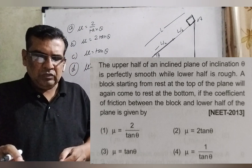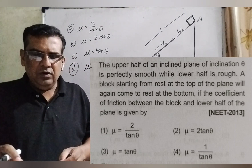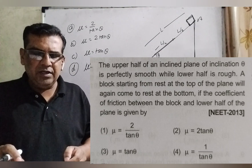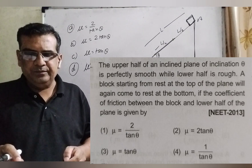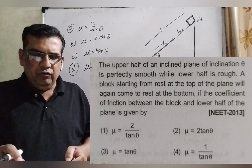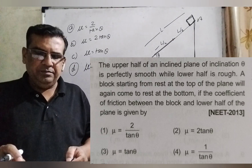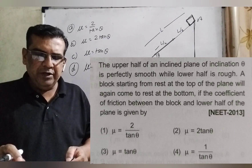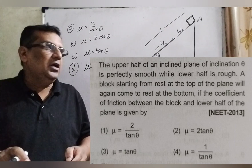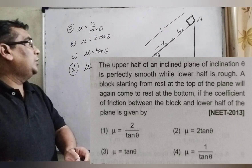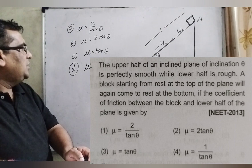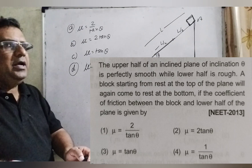Now here is the question. The upper half of an inclined plane of inclination theta is perfectly smooth while the lower half is rough. A block starting from rest at the top of the plane will again come to rest at the bottom. The coefficient of friction between the block and the lower half of the plane is given. Option A: mu equal to 2 by tan theta. Option B: mu equal to 2 tan theta. Option C: mu equal to tan theta. Option D: mu equal to 1 by tan theta.